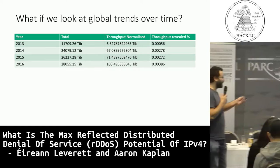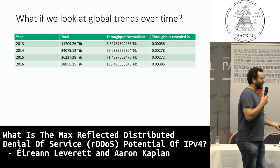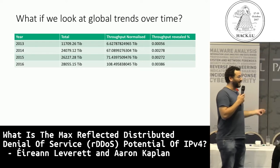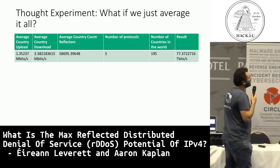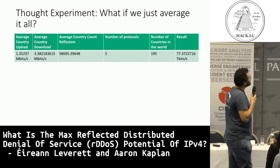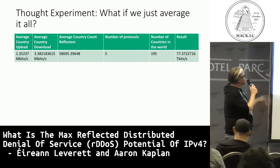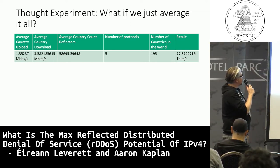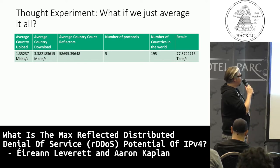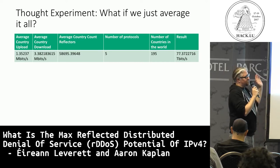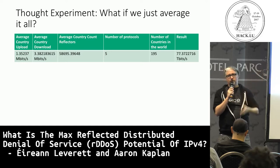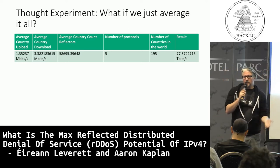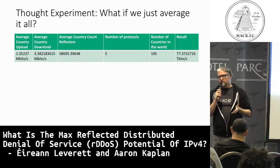Big pipes not only make the internet faster - they also make DDoS faster. If we throw away our complicated mathematical models and just do averages, you come out with a very different result. I'm not comfortable with that approach; it's better to do individual countries or ASN-level data. We're planning to redo this analysis at ASN level.